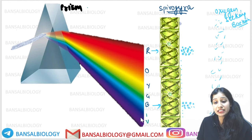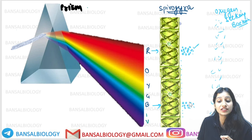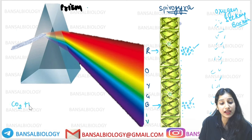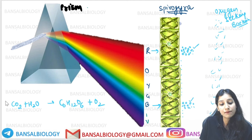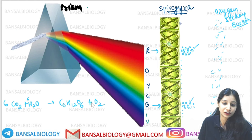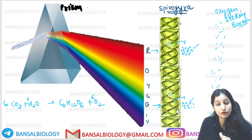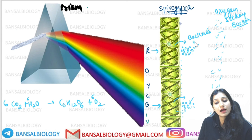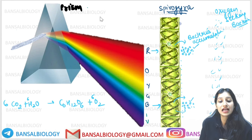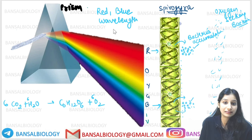What do we know from this? We know that the red and blue regions had the most photosynthesis. How do we know? Because photosynthesis produces oxygen: CO2 + H2O gives C6H12O6 + O2. This is the photosynthesis reaction we always read. So the red and blue regions had the most photosynthesis, which means the most oxygen was released there, and that is why the most bacterial clumping occurred in those regions.